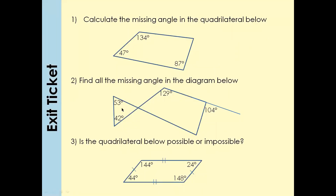For this one, first add 53° + 42° to find the missing angle in the triangle: that's 95°, so the third triangle angle is 180° − 95° = 85°. Opposite angles are equal, so the other angle is also 85°. Then 180° − 104° = 76° for the angle on a straight line. Adding 76° + 129° + 85° = 290°, and 360° − 290° = 70°.